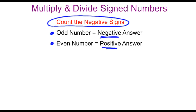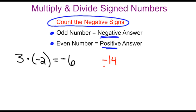Watch how this works. If we wanted to do 3 times negative 2, we simply think about 3 times 2 being 6, and then we count the number of negative signs in the problem. We only have one negative sign, and since 1 is an odd number, that means our answer will be negative. Let's try negative 14 divided by 2. Well, 14 divided by 2 is 7. We count the number of negative signs in the problem — there's only 1 on the 14 — and since 1 is an odd number, our answer will be negative.